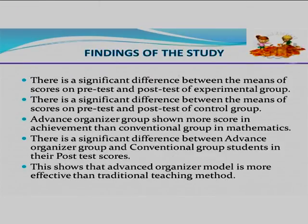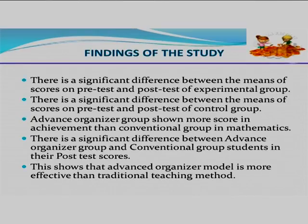The findings of the study: there is a significant difference between means of scores on pre-test and post-test of the control group. The advanced organizer group showed more achievement than the control group students in mathematics. There is a significant difference between the advanced organizer group and the conventional group in their post-test scores, showing that the advanced organizer model is more effective than the traditional teaching method.